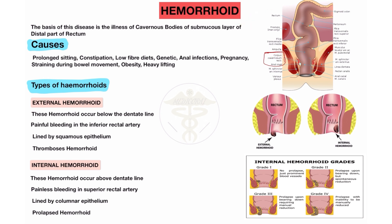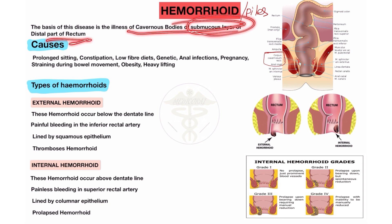Hemorrhoids are also called piles. Please note that hemorrhoid is also called piles disease, because some people don't know what piles means. So hemorrhoids occur in the cavernous bodies of the sub-mucous layer of the rectum — specifically in the sub-mucous layer of the cavernous body of the rectum.